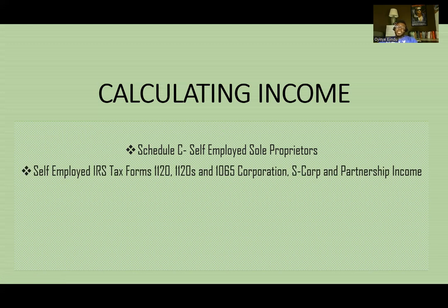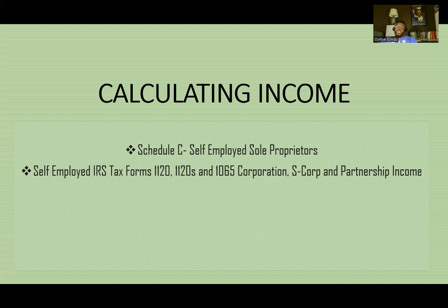The second type of income being calculated covers the self-employed IRS tax forms: 1120, form 1120-S, and 1065 corporations. The form 1120 represents a C corporation — if you own a C corp, you will be filing form 1120, and that is the form the underwriters or mortgage company will use to calculate your income. If you have an S corporation, you will be filing form 1120-S, and the underwriter will use that S corp information to determine your income. If you have a partnership with one or multiple partners, you will be filing a 1065, and the form 1065 is how the underwriter gives you credit for income generated from that partnership. These are multiple different ways they look at a self-employed borrower.